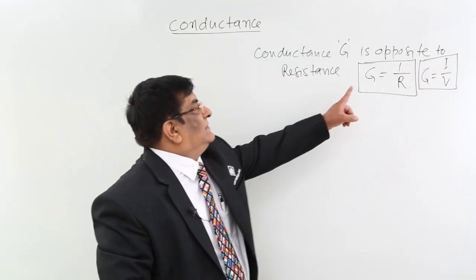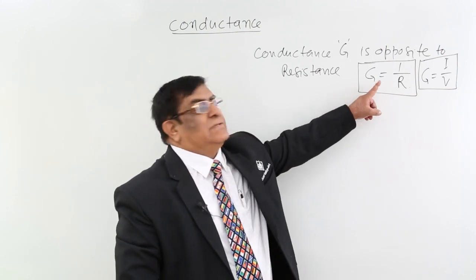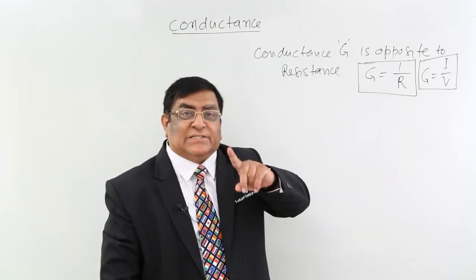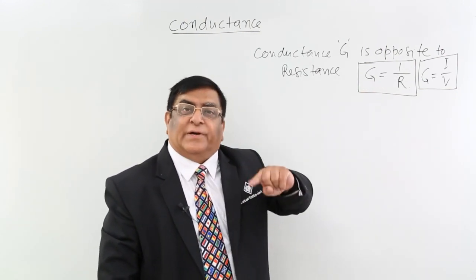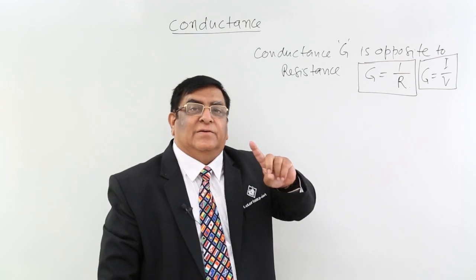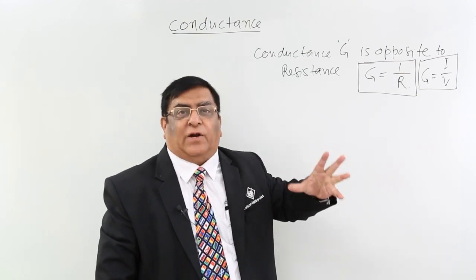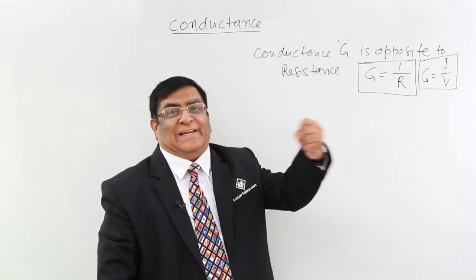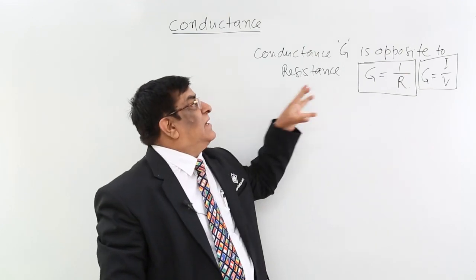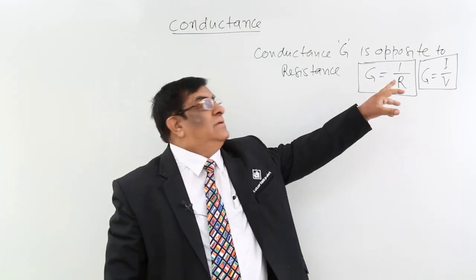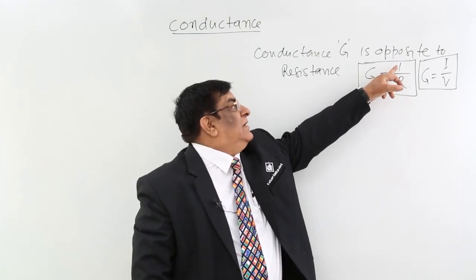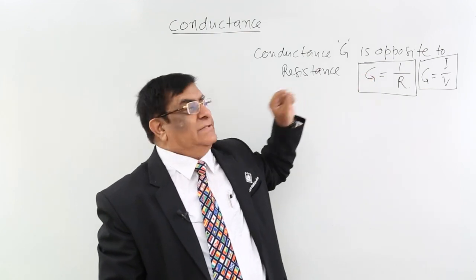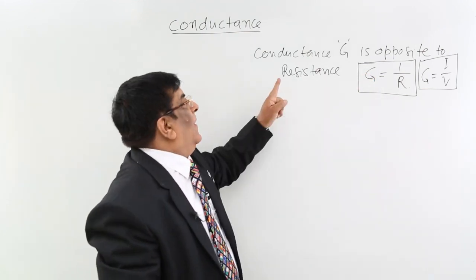Conductance is a property of the conductor, while resistance is a property of insulators and non-conductors — how much they resist the current. Conductance describes how much a material allows the current to pass.